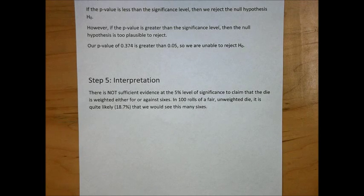In our interpretation, we say that there is not sufficient evidence at the 5% level of significance to claim that the die is weighted either for or against sixes. In 100 rolls of a fair, unweighted die, it is quite likely, 18.7%, that we would see at least this many sixes, and just as likely that we would see an extreme number of sixes on the lower end, thus creating our 37.4% p-value.